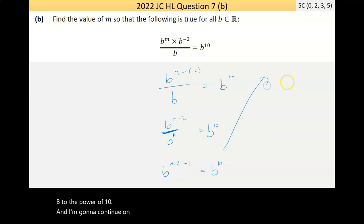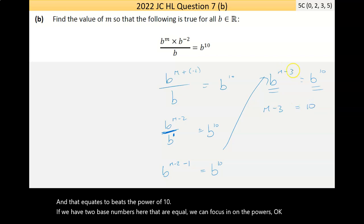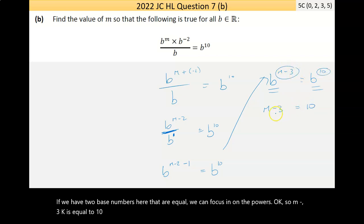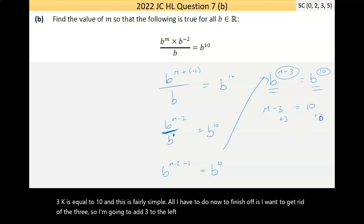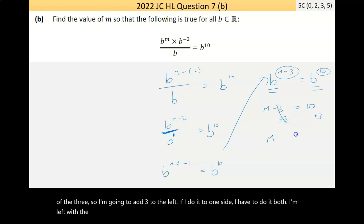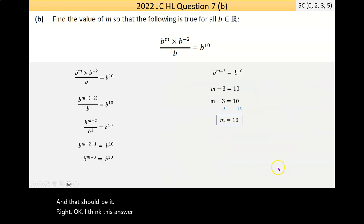I'm going to continue on up here. If I add this, the powers here, so it's B to the power of M minus 2 minus 1 is minus 3. And that equates to B to the power of 10. Now if we have two base numbers here that are equal, we can focus in on the powers. So M minus 3 is equal to 10. And this is fairly simple. All I have to do now to finish off is I want to get rid of the 3, so I'm going to add 3 to the left. If I do it to one side, I have to do it to both. I'm left with 10 plus 3 is 13. And that should be it.